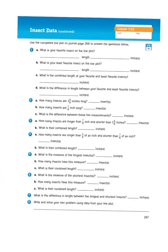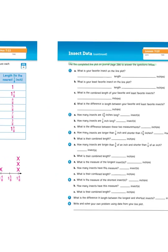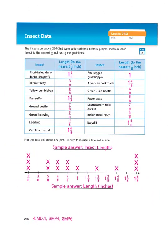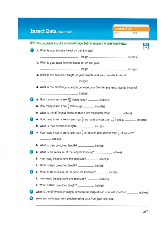Let's take a look at some of the questions. It says use the completed line plot on journal page 266 to answer the questions below. To answer any of these questions, you have to have all this data completed in your table and on your line plot graph. Number one asks about your favorite insects, so we're going to skip that and jump to number two.